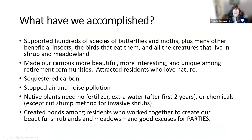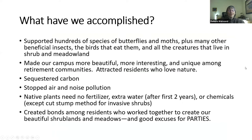So what did we accomplish? We supported hundreds of species of butterflies and moths, plus many other beneficial insects, the birds that eat them, and all the creatures that live in shrub and meadowland. We made our campus more beautiful, more interesting, and unique among retirement communities — residents come because of that. We sequestered more carbon and reduced air and noise pollution. These native plants need no fertilizer, no extra water after the first year, no chemicals except a little help to remove invasive shrubs. And a big side effect was we created bonds among residents who worked together to create our beautiful shrublands and meadows, and we have lots of good excuses for parties.